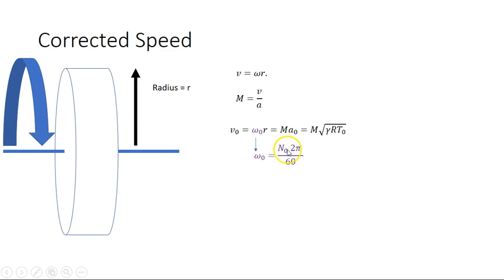So radians per second is really RPM divided by 60 multiplied by 2π. So I'm going to use that instead of omega. So our velocity would be equal to the RPM divided by 60 multiplied by 2π times the radius, and that should be equal to the Mach number times gamma rt0.